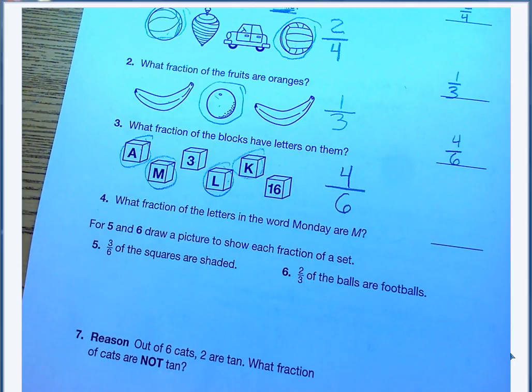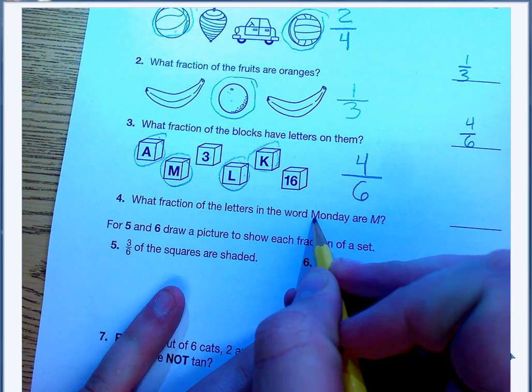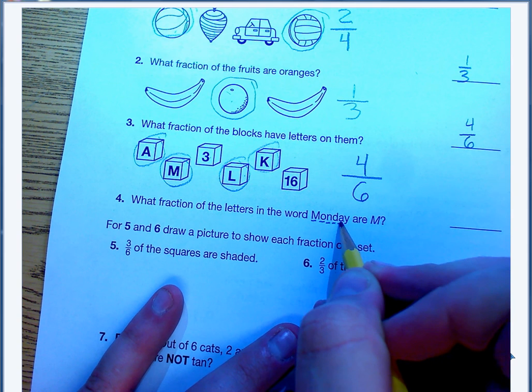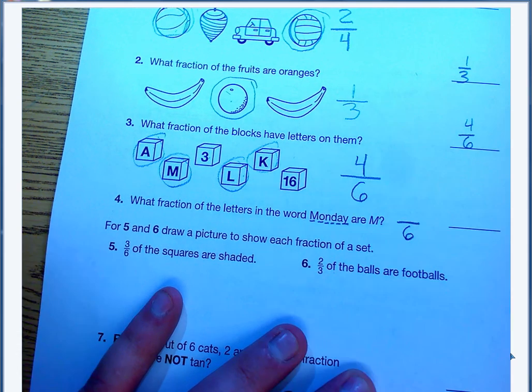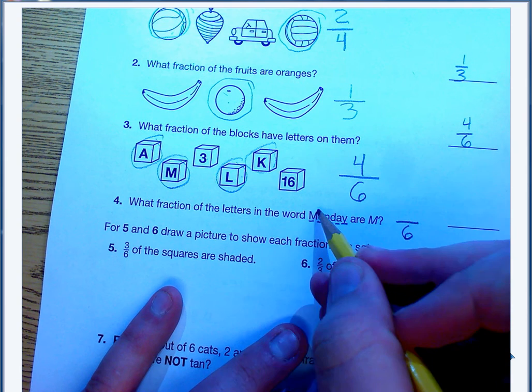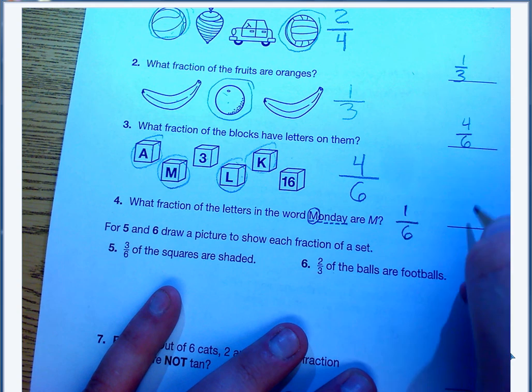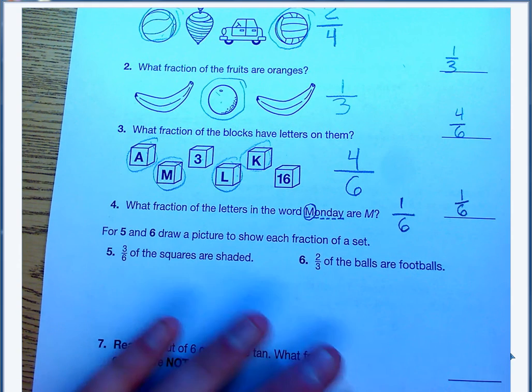Number 4, what fraction of the letters in the word Monday are M? That's a little different. Let's figure out how many letters I have total. 1, 2, 3, 4, 5, 6. 6 is going to be my denominator. And only that one letter, the M, is an M. So I have 1 sixth of my letters in Monday are an M.